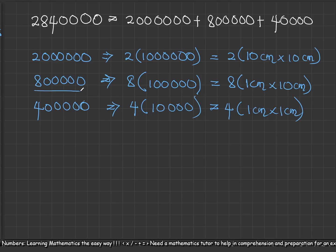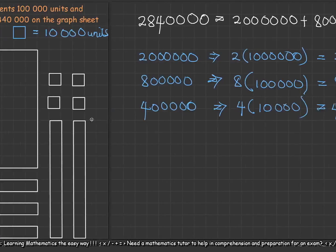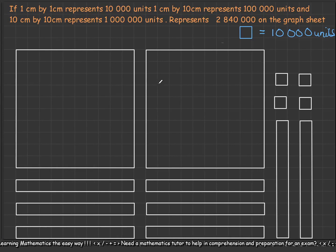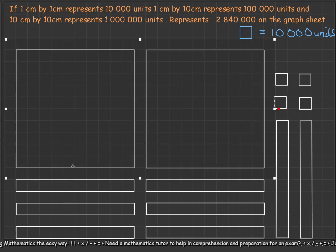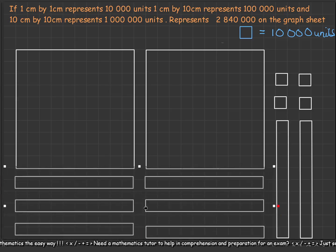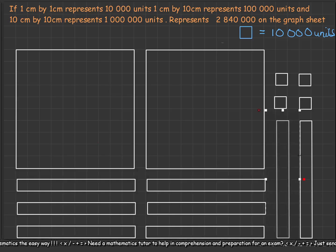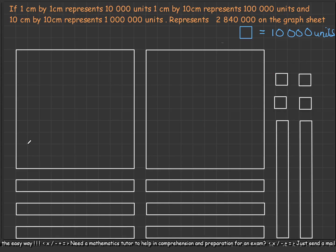For our question, one hundred thousand is eight times one hundred thousand, giving eight times one-by-ten centimeter bars. Forty thousand is four times ten thousand. So graphically, we needed two of the large squares, eight of the rectangular bars, and four of the small one-by-one squares — and that is all. This is how we visualize numbers on our graph sheet.